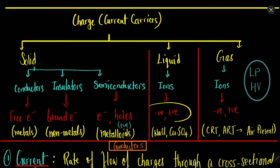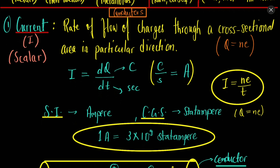In solids the charge carriers are usually electrons and sometimes holes. But in liquids and in gases, positive and negative ions are the reason behind the current. For example, in NaCl solution, current is carried by Na⁺ and Cl⁻ ions. Similarly in gases, ionization takes place and positive and negative ions carry the current.